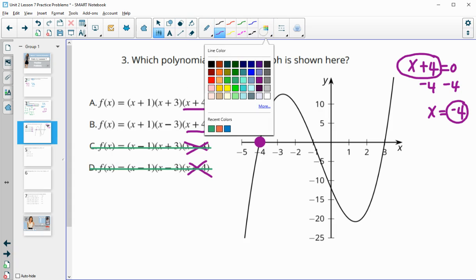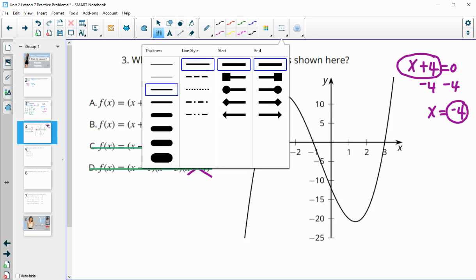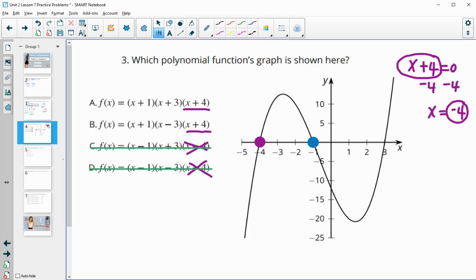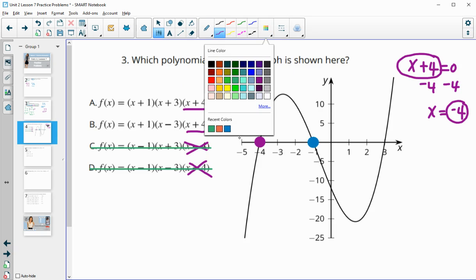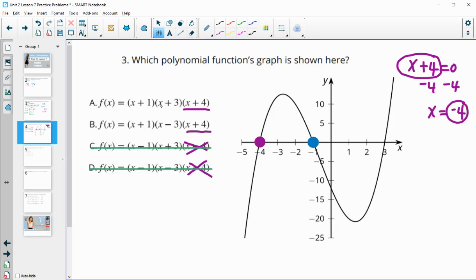Let's take a look at negative 1 and figure out what factor would go with that. These are both x plus 1. That's good, because x plus 1 equal to 0, we would subtract 1 from both sides, and they would both give us a zero of negative 1. So both of these are good.